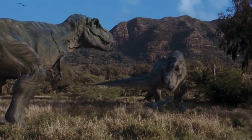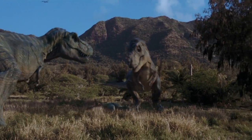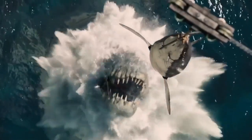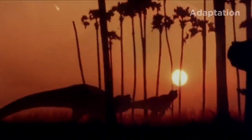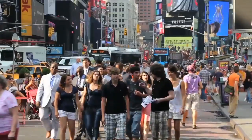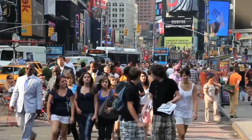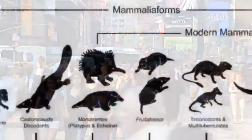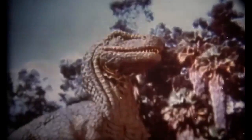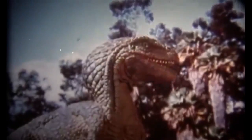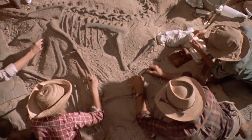Sixty-six million years ago, dinosaurs walked and swam and flew over the Earth. Sixty-five million years ago, an asteroid put a stop to that. And here we are, eons later, descendants of the little mammals that survived the catastrophe. All the dinosaurs of the time left behind as their legacy were fossilized bones.